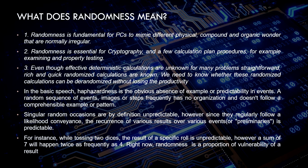For instance, while tossing two dice, the result of a particular roll is unpredictable. However, a sum of seven will happen approximately twice as often as a sum of four. Randomness is essentially a measure of the uncertainty of a result.